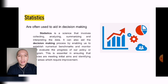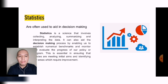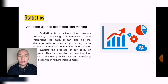Statistics, on the other hand, refers to data. It is a science that involves collecting, analyzing, summarizing, and interpreting data. It can also aid in decision-making — when you have data available, it helps the person in charge make better decisions. It enables us to establish numerical benchmarks and monitor and evaluate the progress of a policy or program. This is essential in ensuring that policies are meeting initial aims and identifying which areas require improvement. In summary, statistics is a science involving hard facts, numbers, and data — you collect it, analyze it, summarize it, and then interpret it.